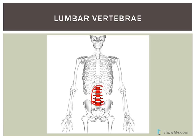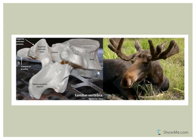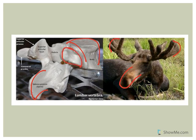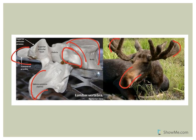The lumbar vertebrae — there are five — resemble a moose. They have very large vertebral bodies because they bear a lot of weight. You can see the body, the spinous process like a big nose, and the transverse processes on the sides. Here in the side view you can again see the body, spinous process, and transverse processes.